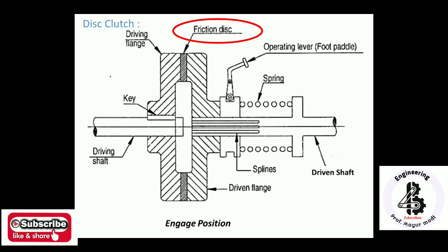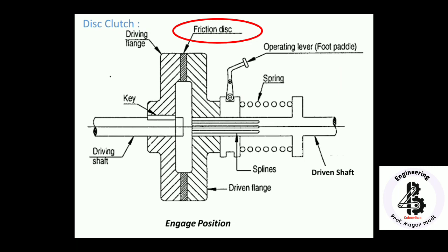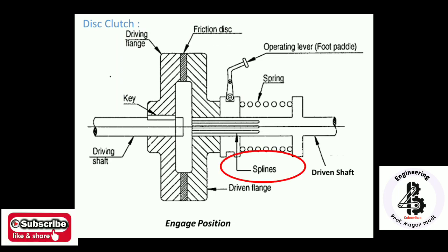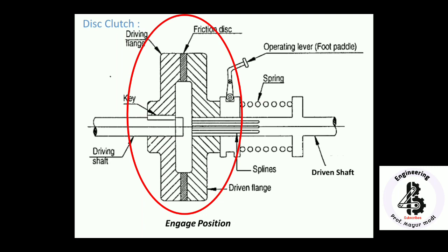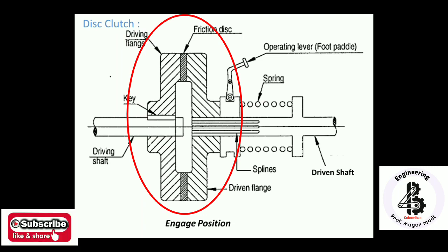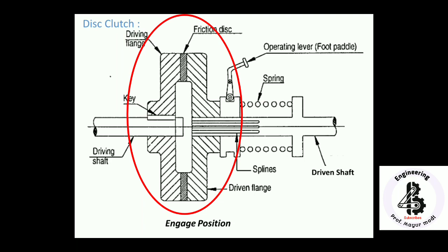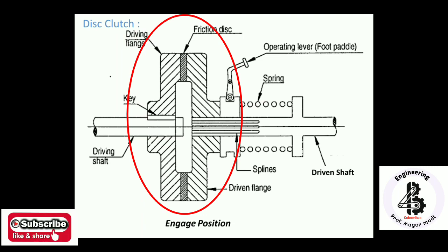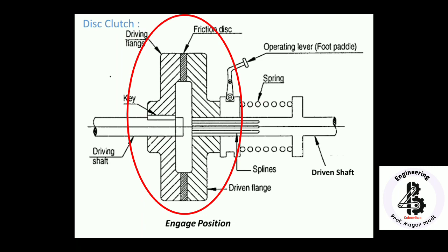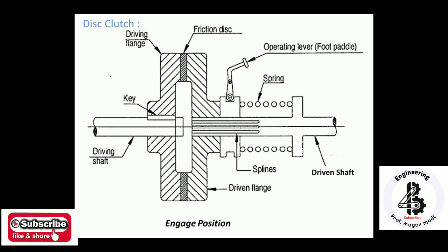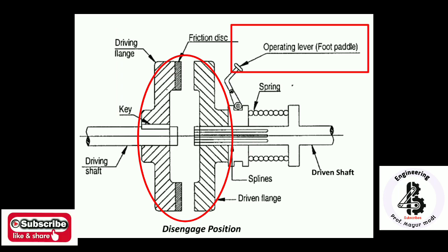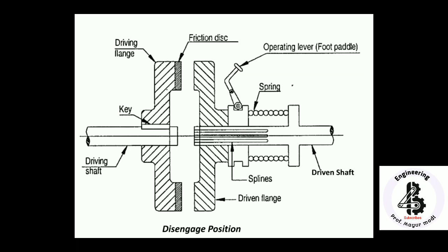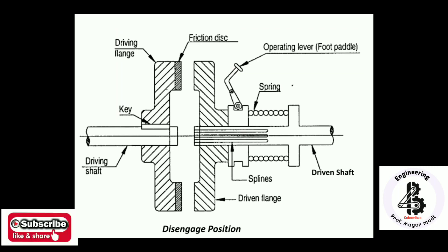The friction disc, or driven flange, reciprocates along the driven shaft using splines. When both the driving flange and driven flange are in contact, power and motion are transmitted from the driving shaft to the driven shaft. A spring provides pressure through levers — this is the engaged position of a single plate disc clutch. Using a foot lever, the clutch can be engaged or disengaged depending on the requirements of the machine or automobile.